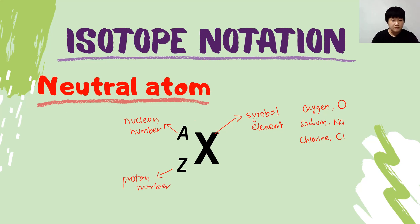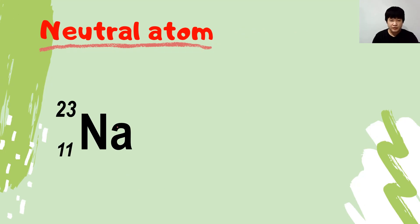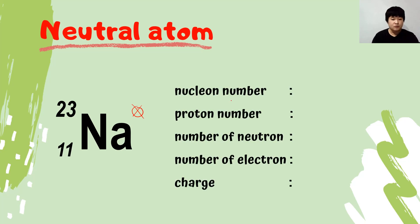Since it's a neutral atom, there is no charge. The first example on the screen is sodium. It's a neutral atom, so there is nothing in the charge position. From this isotope notation we can read the nucleon number, which is 23 — that is the value of A — while 11 represents the proton number.